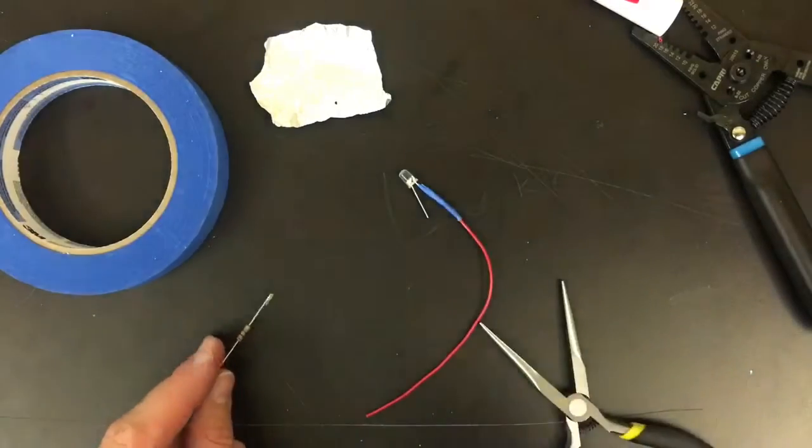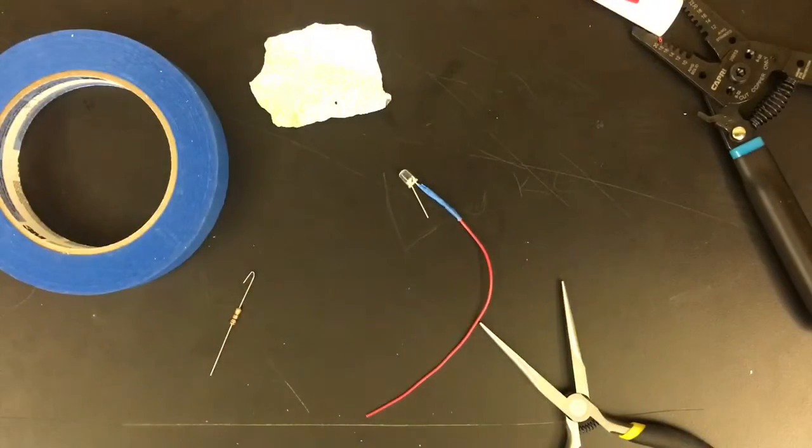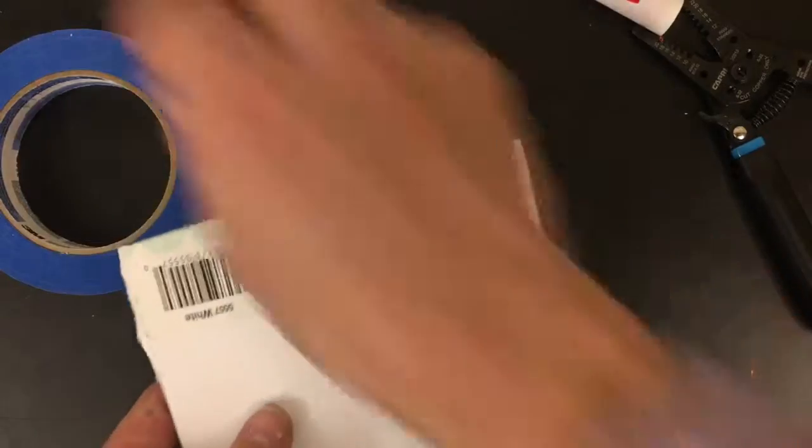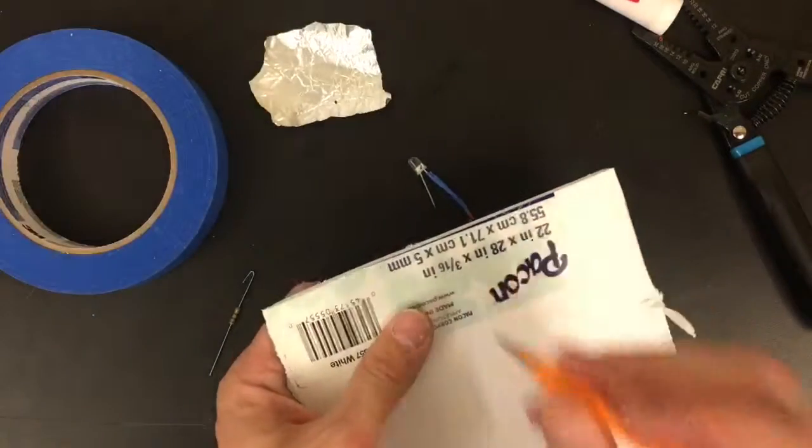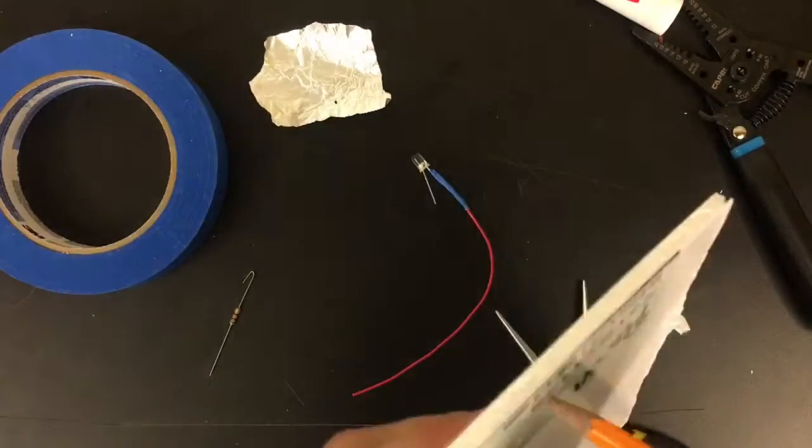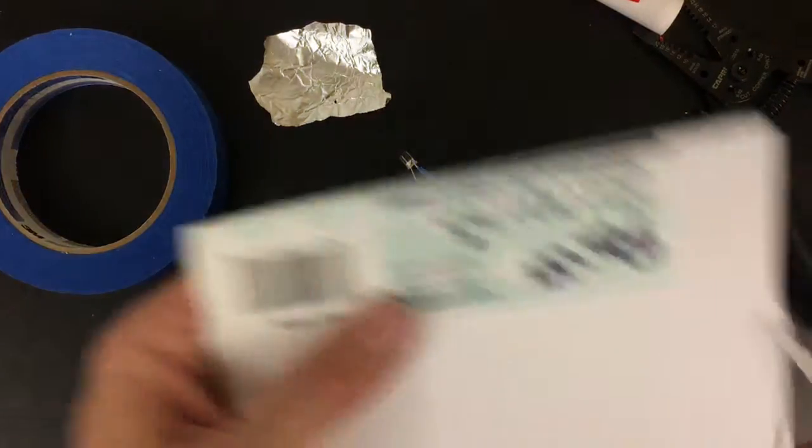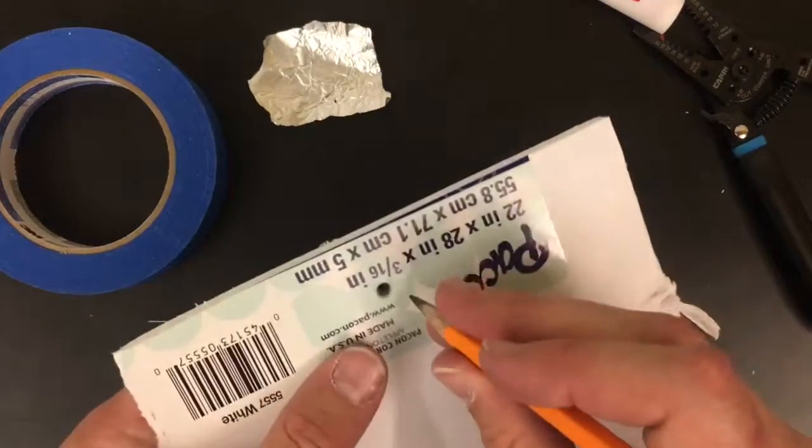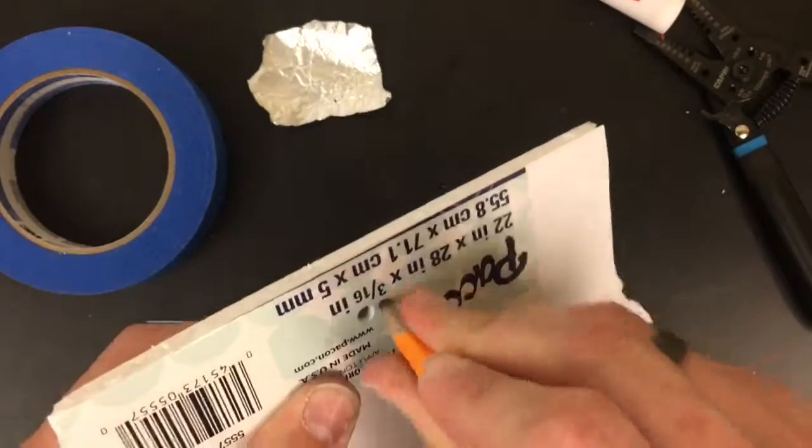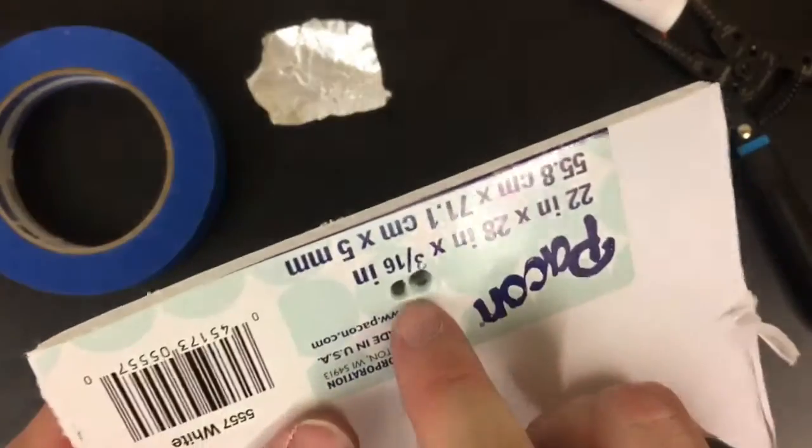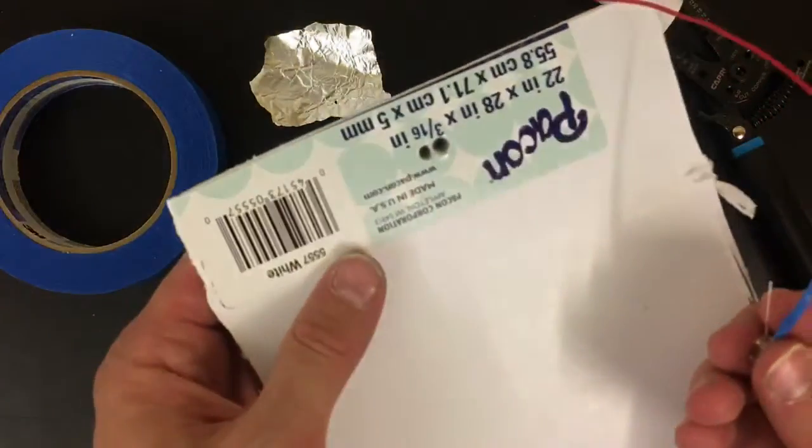But I do want to show you one other thing, which has to do with how you want to mount these in the walls or the ceilings of your house. Notice I've got a piece of scrap foam core here. And if I just use a sharp pencil to poke through this, and then kind of twist the pencil back and forth like that, I give myself a hole that I can put this wire through. If I do that again, right next to it, really, really close in fact, and give myself another hole like that, I've got two holes for the two wires that are sticking out of this thing.